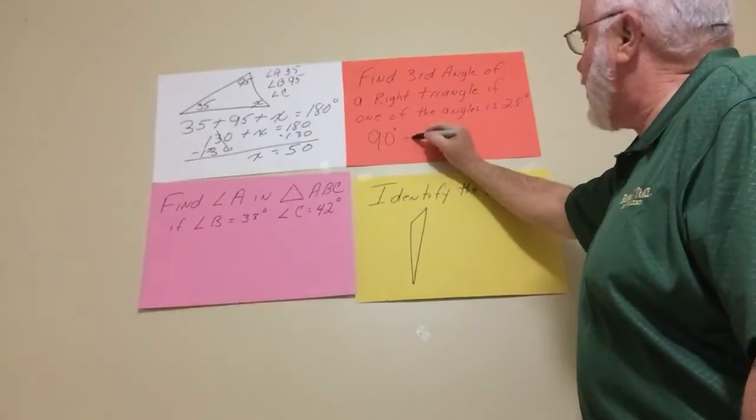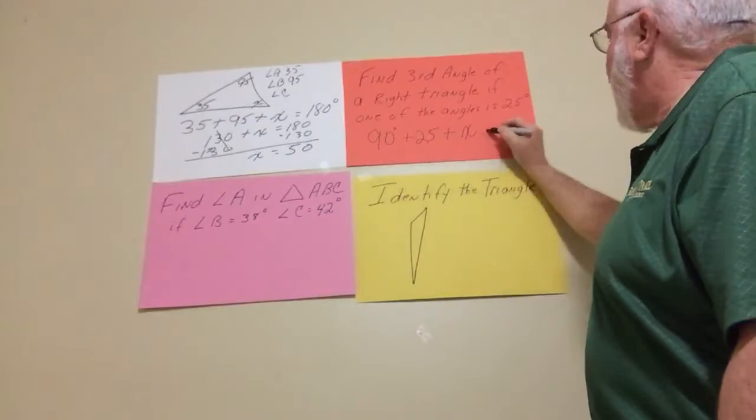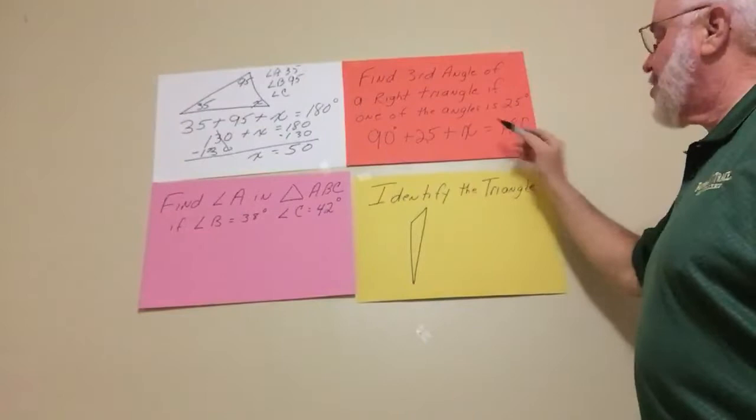Then they're telling us the other one is 25 degrees. So what is the third one? So we know when we add them all up equals 180.